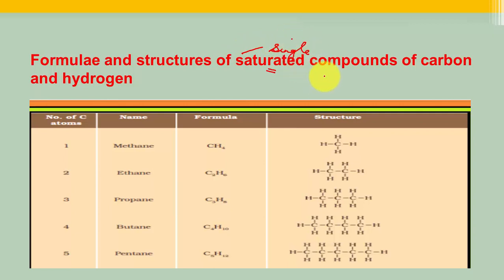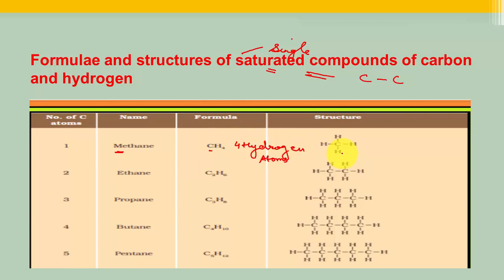In saturated compounds, there is a single bond between carbon atoms — no double or triple bond. Some examples: if there is one carbon atom, it is known as methane. The formula is CH4. There is one carbon and four hydrogen atoms.